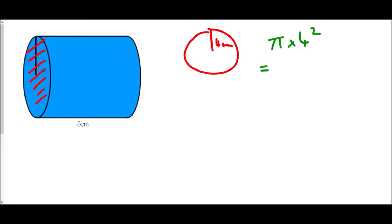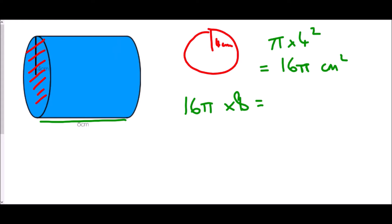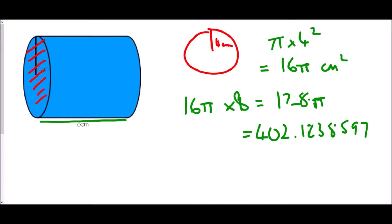Pi times 4 squared. If you type pi times 4 squared into a calculator, it would actually come up saying 16 pi. That's how I'm going to leave it to start with, because 16 pi is the area of the cross section. But if I want to get the volume, I need to multiply it by its length. So I'm going to do 16 pi times 8. Typing that into a calculator: 16 times pi times 8 is 128 pi. Generally we want to give this as a decimal: 402.1238597. Usually we'd want to give that rounded to two decimal places, so this will be 402.12 centimetres cubed.